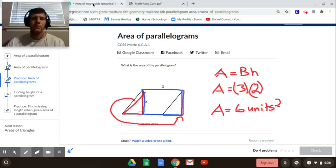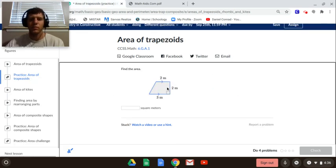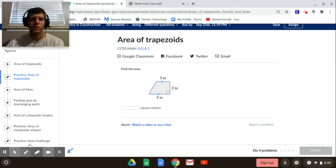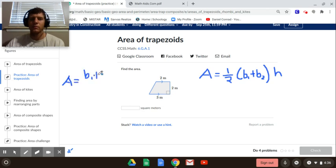Let's go to the next one which is a trapezoid. The area formula for a trapezoid is 1 half base 1 plus base 2 times the height. It can also be written as base 1 plus base 2 over 2 times the height.